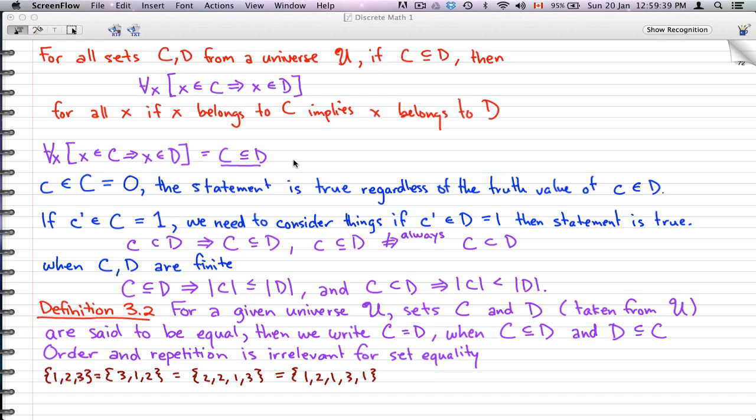So let's just go through an example. Let's say that we have C with element A, and D with B and C.